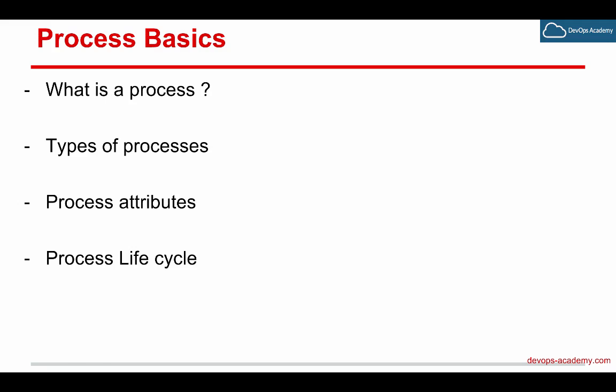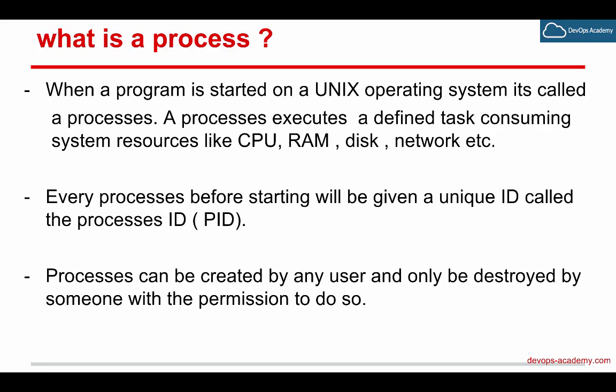So, process basics — what is a process? When a program is started on a UNIX operating system, it's called a process. Whenever you execute any program like Firefox or a Chrome browser, or any shell script you execute — that which executes on a UNIX operating system and uses RAM, CPU, disk, or network IO — that is called a process.